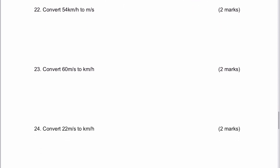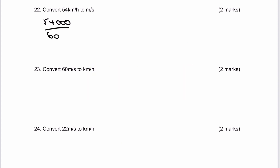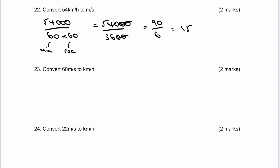Let's have a look at question number 22. We've got 54 kilometres per hour — almost immediately I make that 54,000 metres per hour. Dividing by 60 gives metres per minute, and dividing by another 60 gives metres per second. Divide top and bottom by 100, giving 540 over 36. Then divide top and bottom by 6, giving 90 over 6, which equals 15 — because 6 goes into 90 fifteen times. So the answer is 15 metres per second.